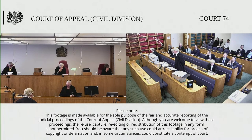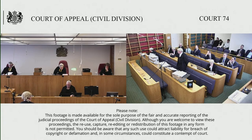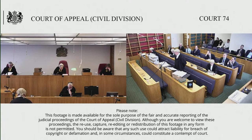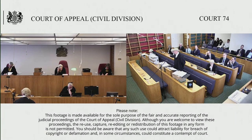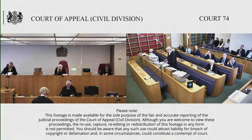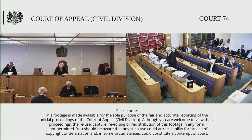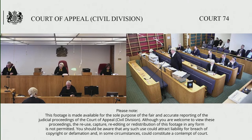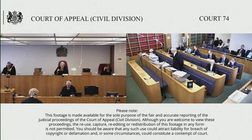Equally, 6.2 does not say rights to payments as consideration for the working or the right to work mineral deposits, or payments computed by reference to mineral deposits or mineral production. Here it's useful to turn up tab 7 in the first volume of authorities, which is the double tax agreement between Canada and the United States, entered into in 1980 with a protocol in 1983, Article 6.3.